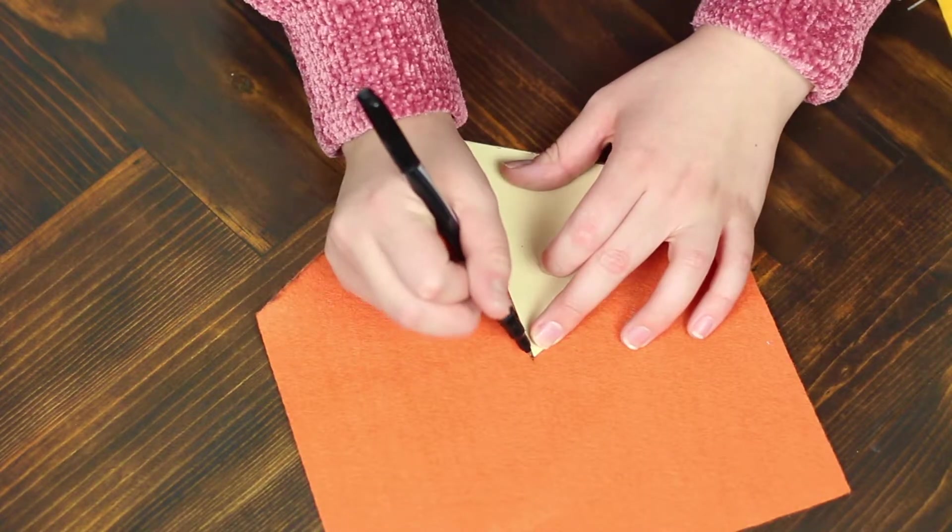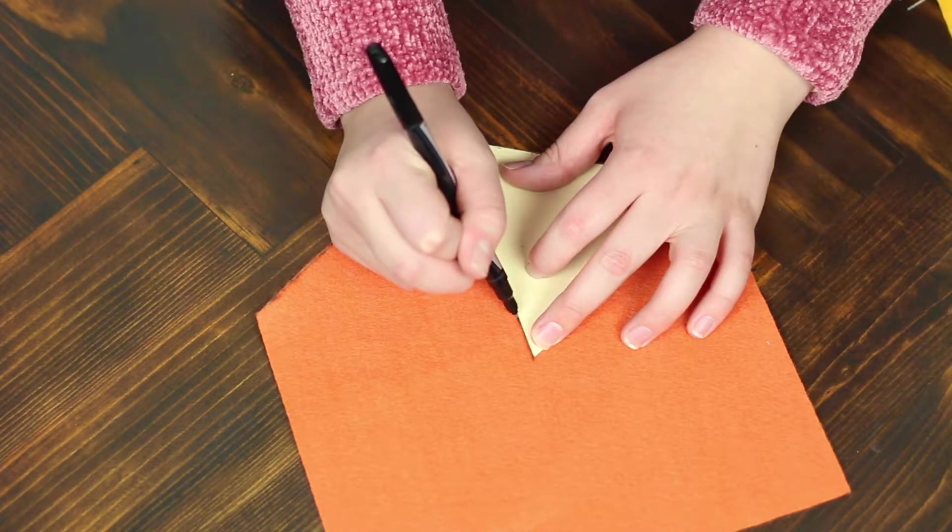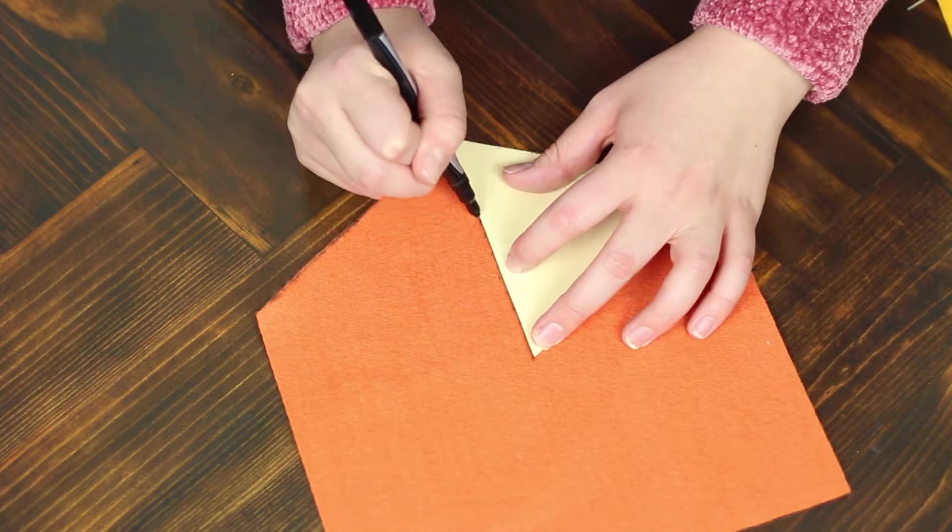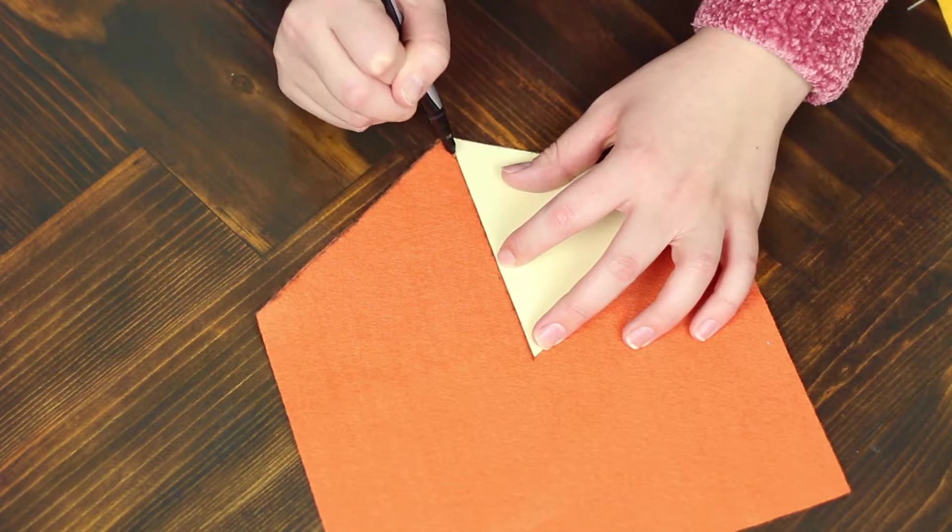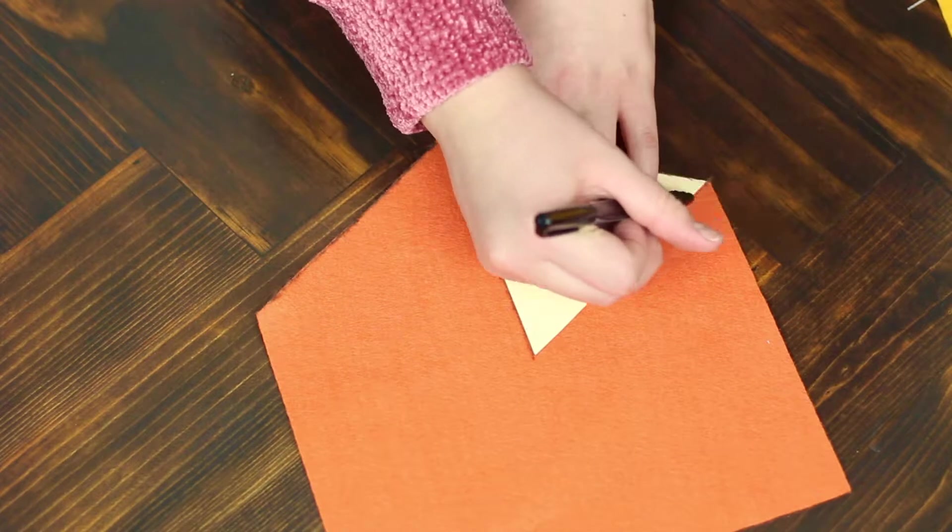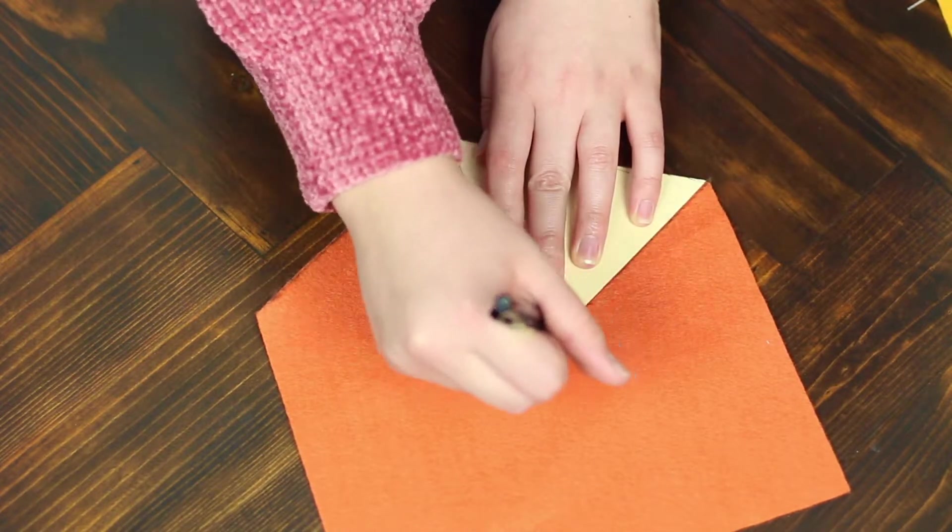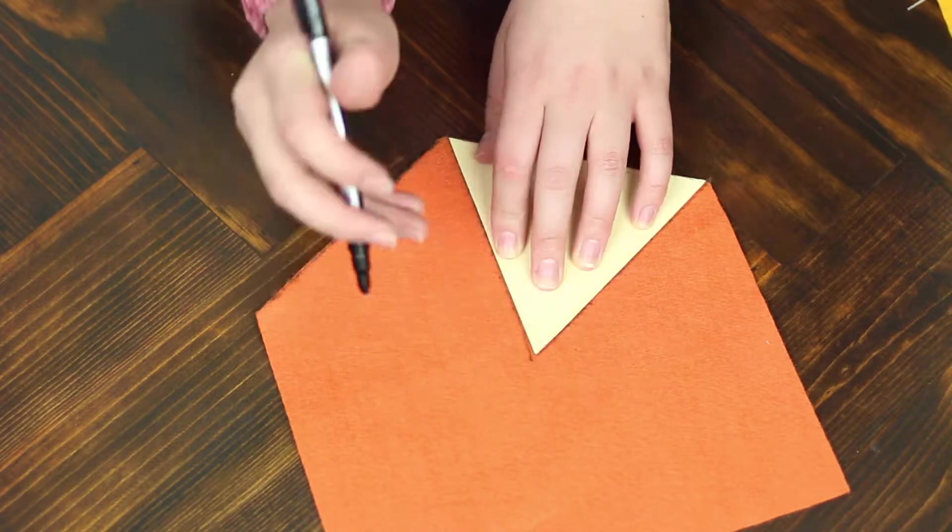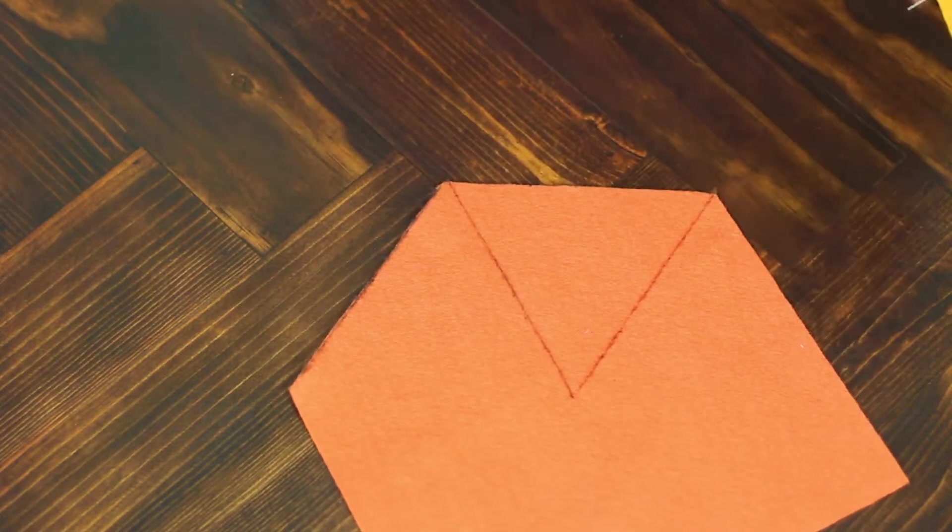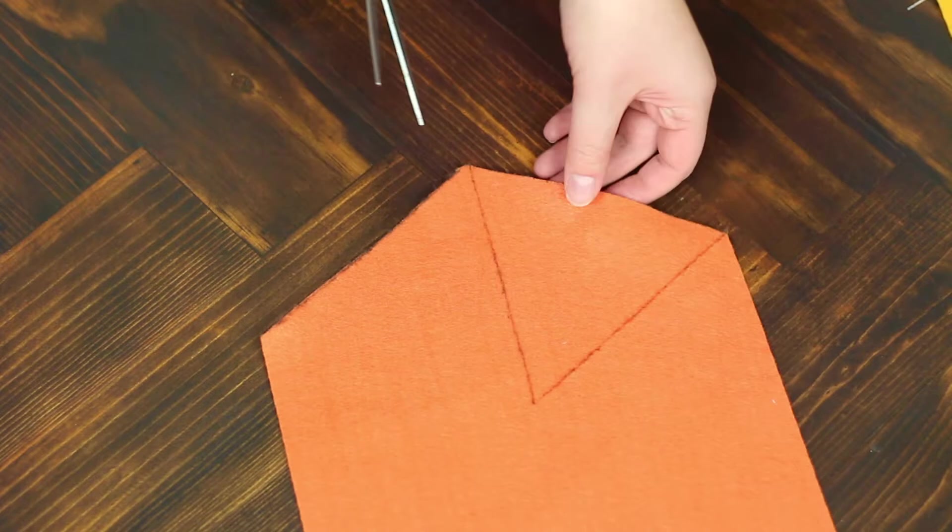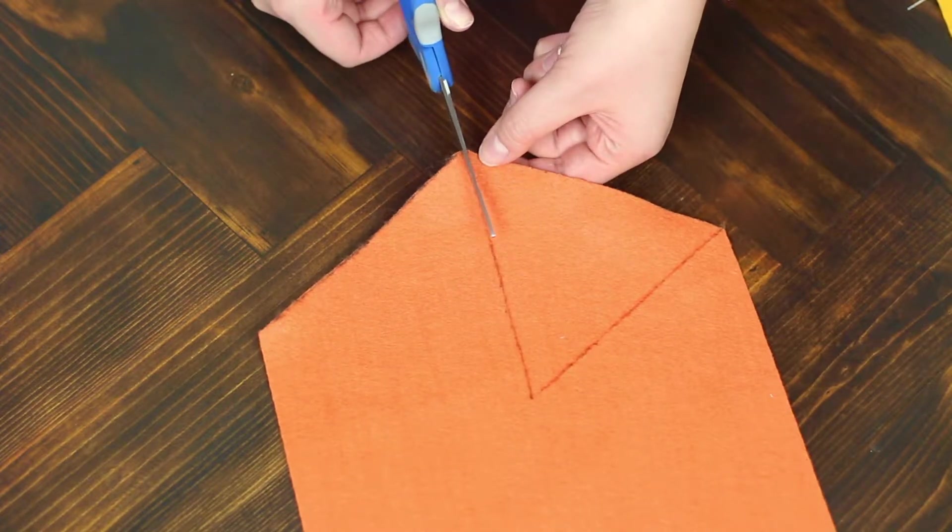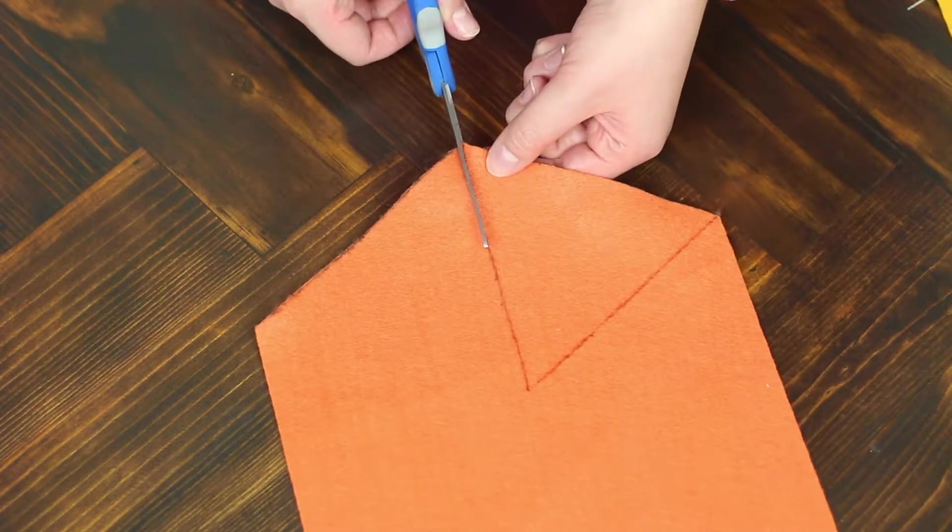You are going to start off by tracing out the triangle on the felt. So this is going to be the biggest one. I found that two sheets of felt of each color was enough. This is pretty self-explanatory. You're going to trace the triangles on the felt and then just go ahead and cut them out.